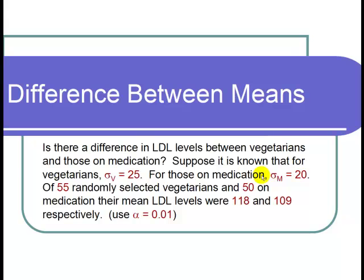Suppose it is known that for vegetarians sigma sub v is equal to 25. For those on medication, sigma sub m equals 20. Of 55 randomly selected vegetarians and 50 on medication, their mean LDL levels were 118 and 109 respectively. Use alpha equals 0.01.